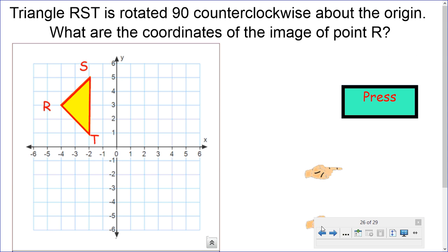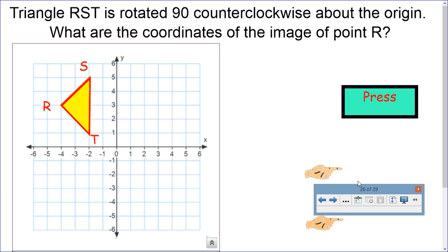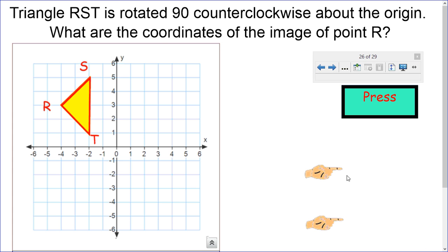Here's one for you. Triangle RST is rotated 90 degrees counterclockwise about the origin. What are the coordinates of the image of point R? There's point R right here. And the image, this is the pre-image we want. What is it going to be when we rotate it counterclockwise? Remember which way is counterclockwise? That's for you to try. I'll give you hints. You can select your graph paper and turn it. That's a nice trick in doing it. Another thing, you can memorize the rules. (-y, x) will help you also.